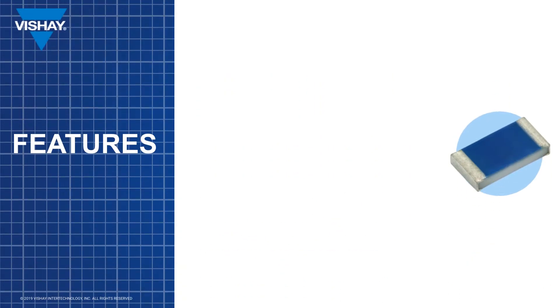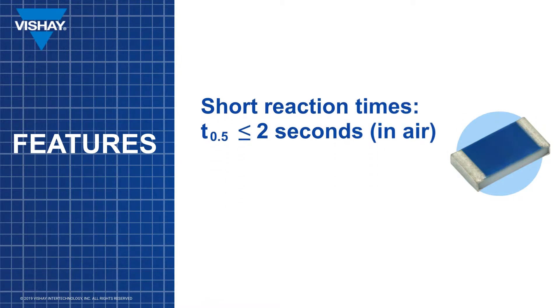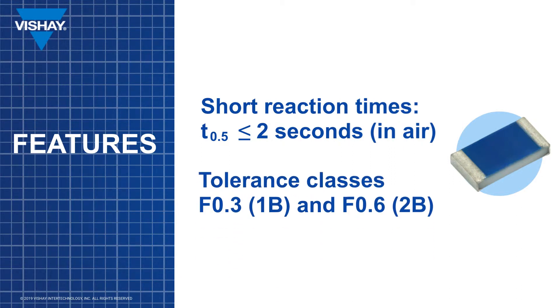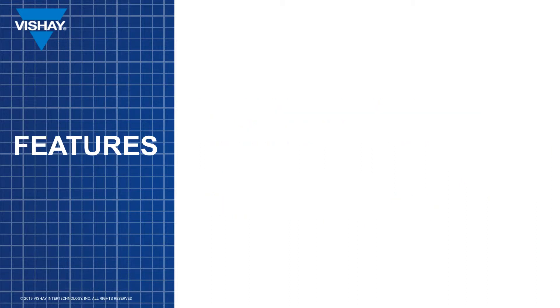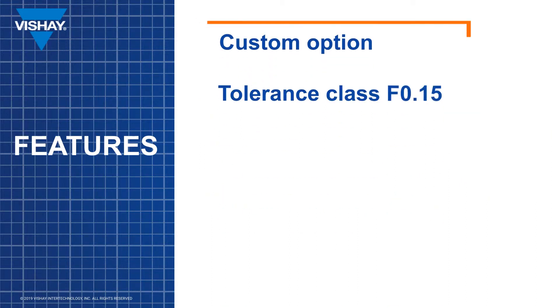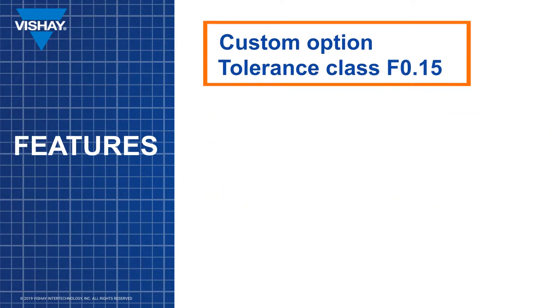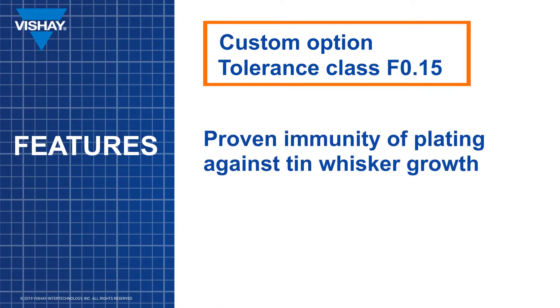The PTS-AT has a short reaction time less than one second in air depending on package size. The PTS-AT is available in both F0.3 and F0.6 tolerance classes. As a custom option the PTS-AT can be produced in F0.15 tolerance class. Pure tin on nickel terminations provide a proven immunity against tin whisker growth as demonstrated through extensive testing.